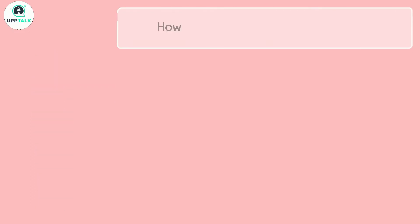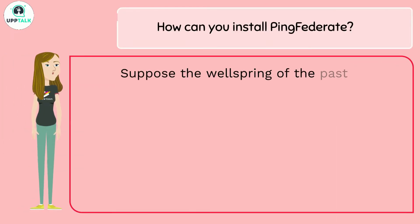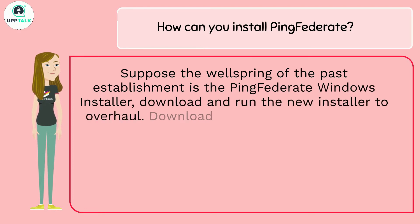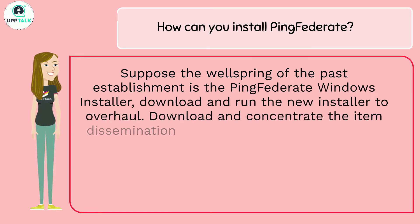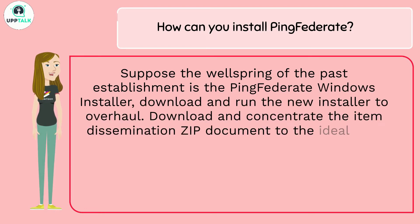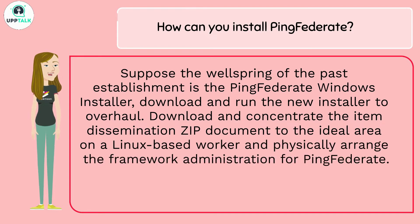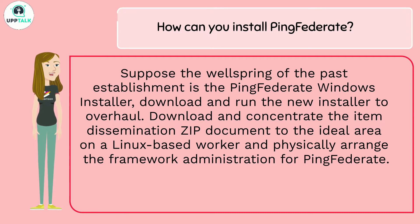How can you install PingFederate? If the source of the previous installation is the PingFederate Windows installer, download and run the new installer to upgrade. Download and extract the product distribution zip file to the desired location on a Linux-based server and manually configure the system service for PingFederate.